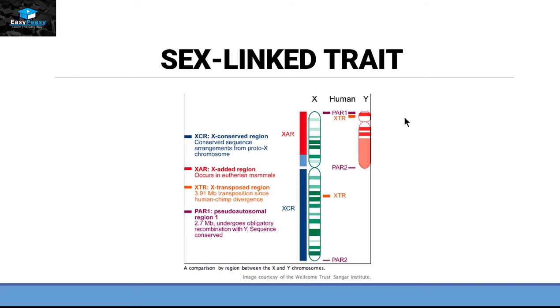Now, these sex chromosomes other than recognizing the gender of a person have other genes on it. And these genes are mostly present on X chromosome. So sex-linked traits are also called X-linked traits.